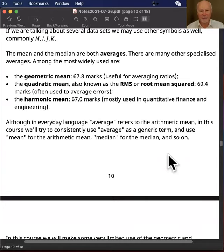There's another one called the quadratic mean, which is used quite a lot in statistics and in machine learning and prediction. That's also known as the root mean squared or RMS. It turns up in engineering too. And the next most common is probably the harmonic mean, 67 marks in our case,